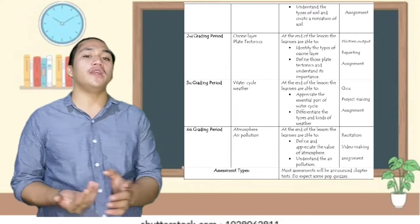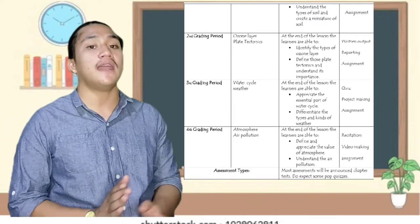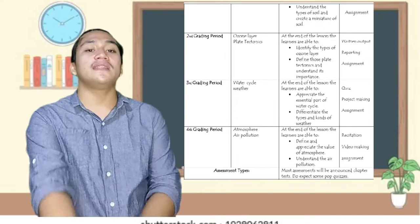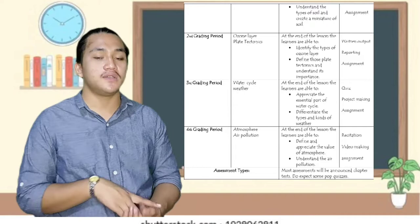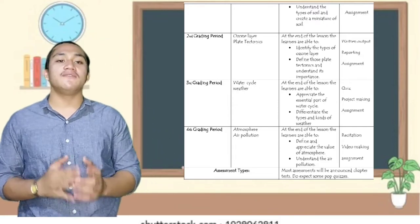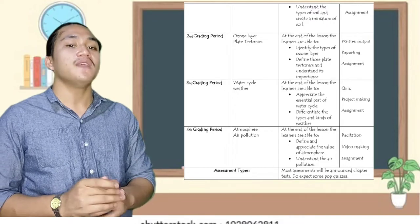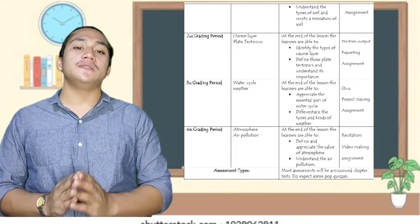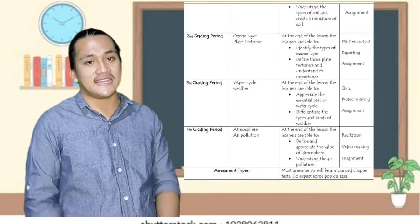The time frame for the fourth grading period, with the content of atmosphere and air pollution. The topic learning outcome: at the end of the lesson, the learners are able to define and appreciate the value of atmosphere, understand air pollution. The assessments that we need to use are recitation, video making, and assignment.